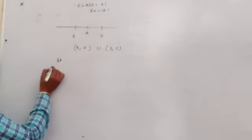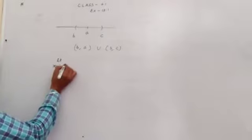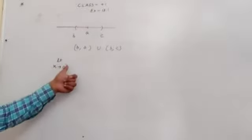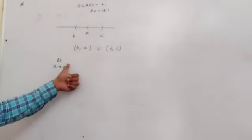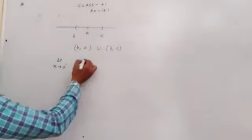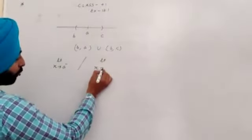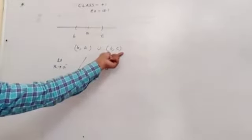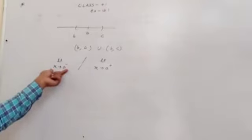Then beta, left limit can be written as X approaches to A. If we choose X from left neighborhood, then it is called left limit. If we choose X from right neighborhood, then it is called right limit.